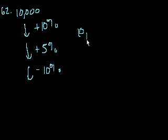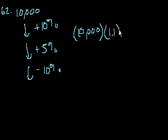So you start with $10,000. When you grow by 10%, that's the same thing as multiplying by 1.1. And then you grow by another 5%, that's like multiplying by 1.05. And then when you decrease by 10%, that's like multiplying by 0.9.